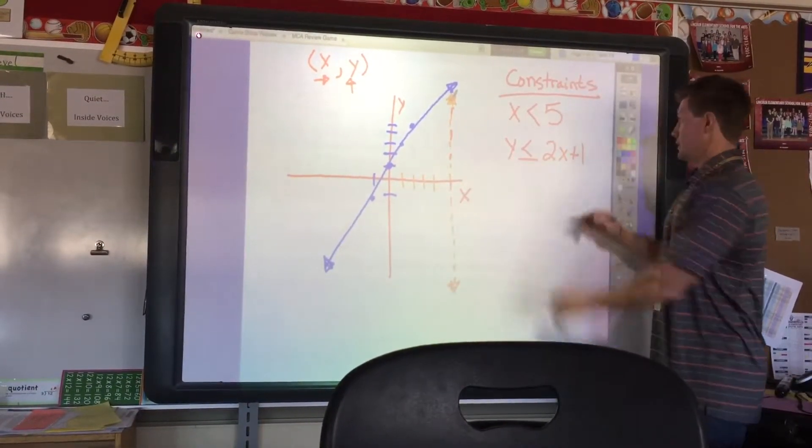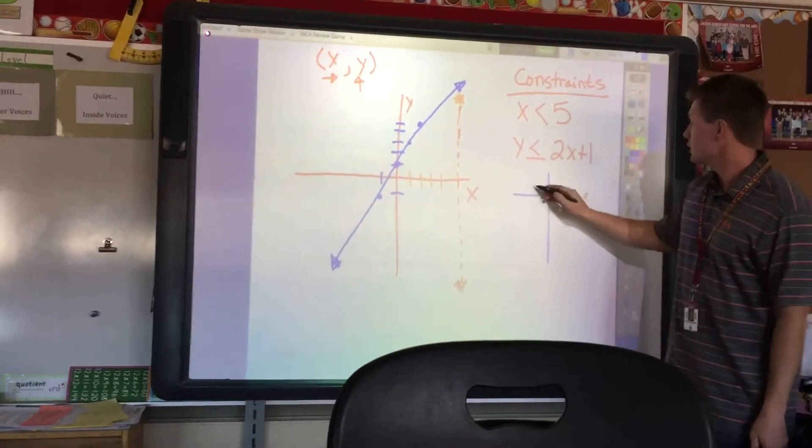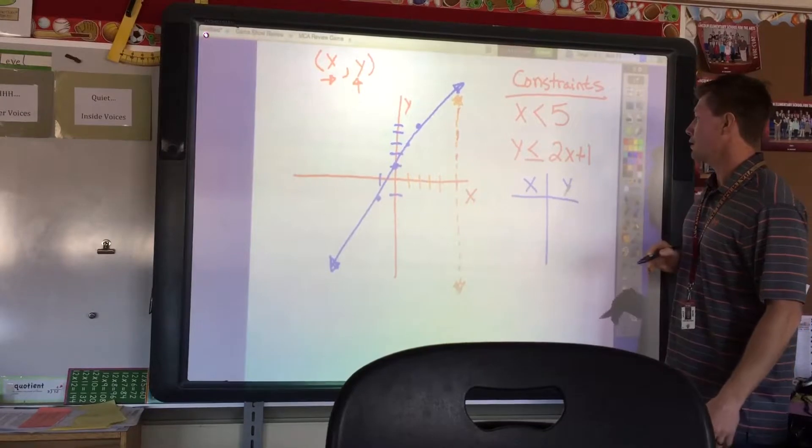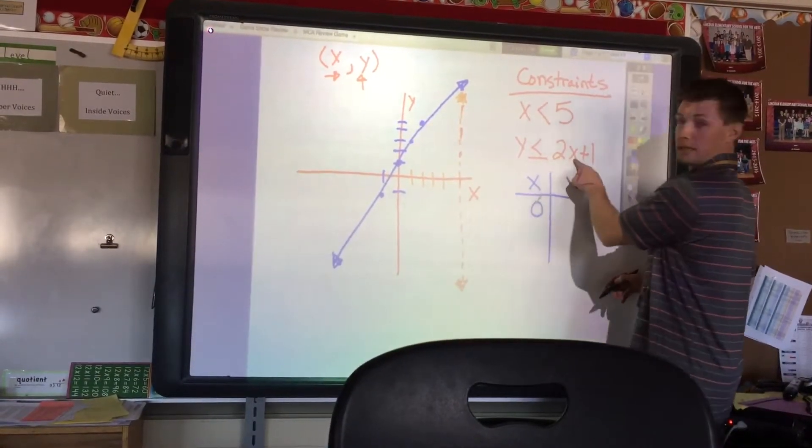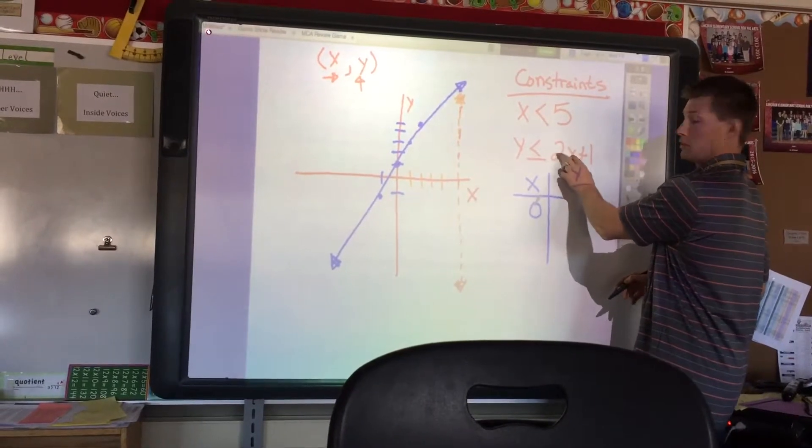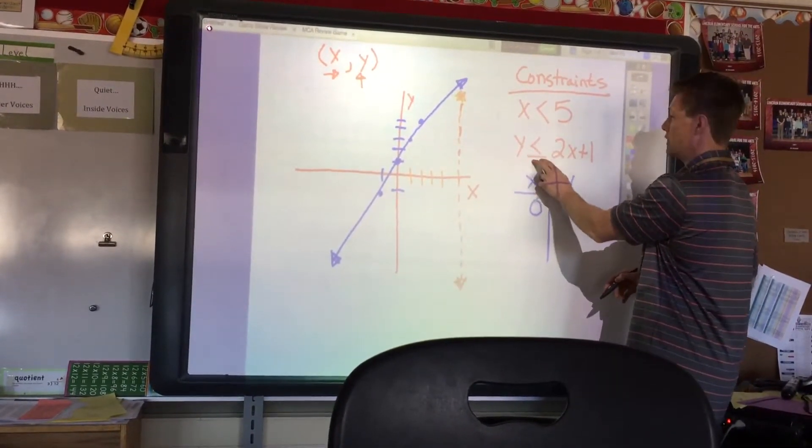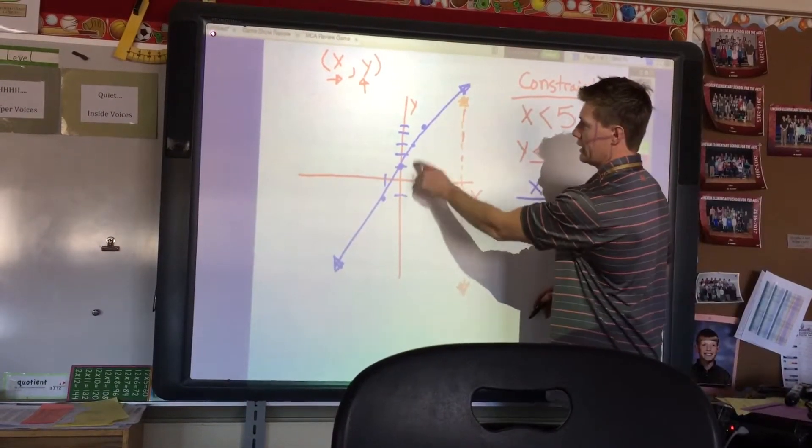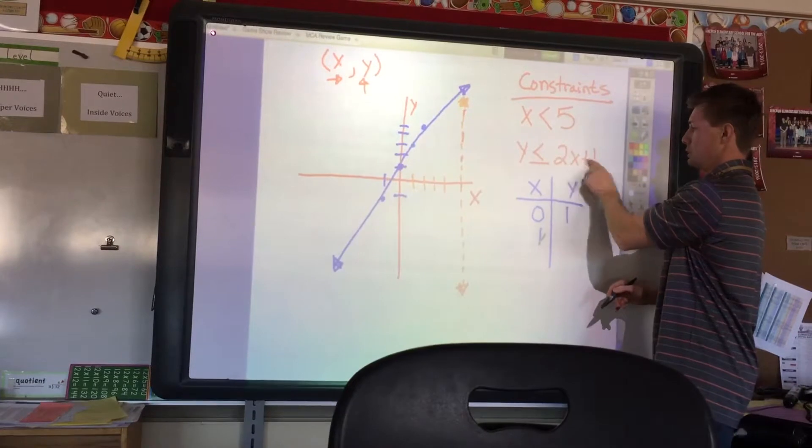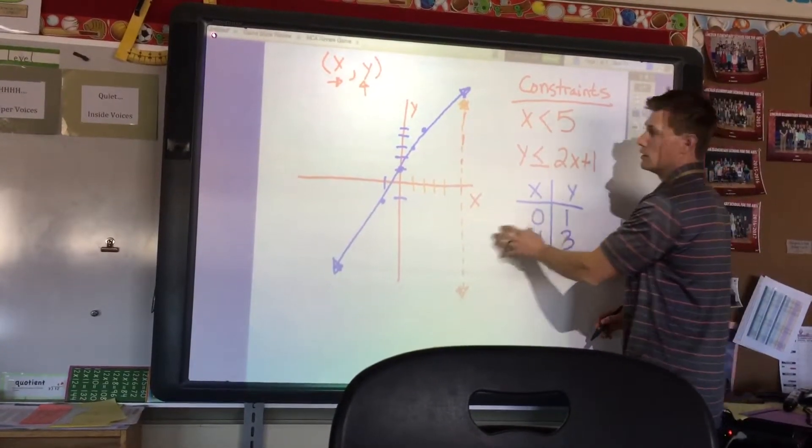Another way to plot this is to understand I can make this as an input-output chart. So here's my x, here's my y. If I plug in x as 0, I plug in 0. 2 times 0 is 0. Plus 1 is 1. y is less than or equal to 1. If I plug in 1, I get out 3. 2 times 1 is 2. Plus 1 is 3. And we can use this chart to plot.